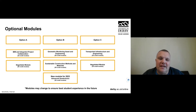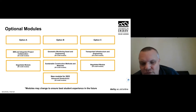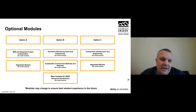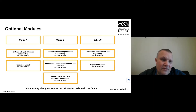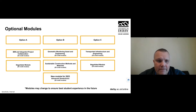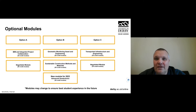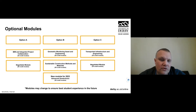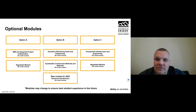The option pools are always being reviewed as we react to market demands and develop new modules. From pool A, there is a BIM and Integrated Project Collaboration module covering building information modelling, communication, and project management within the construction industry. There is also a negotiated module, though this requires the candidate to have a suitable working practice to base their study on. We generally prefer people to do the standard taught modules, and this would be something to discuss with your programme leader when considering your options.